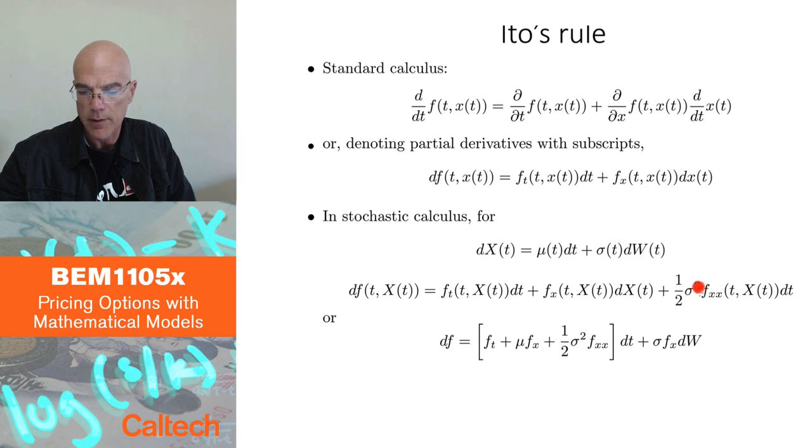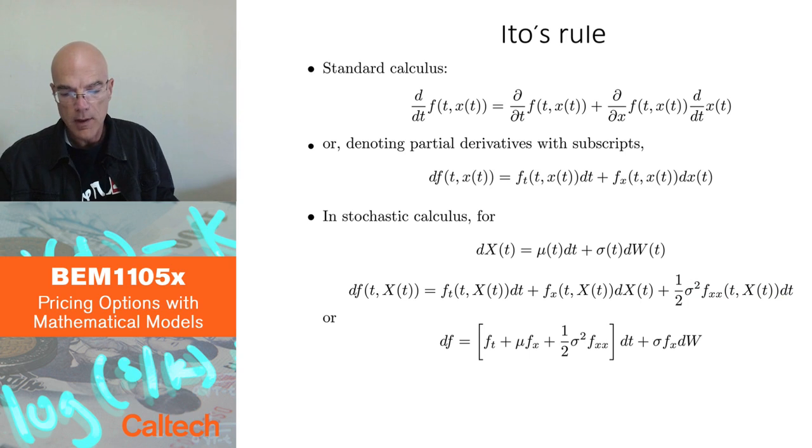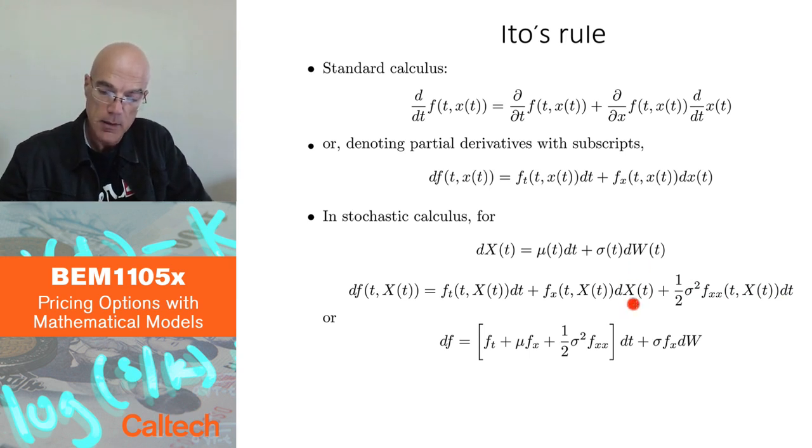If I replace dx by what it is, I can write Ito's rule in this form. So this is a nice form to use when you use Ito's rule. Change in f is a combination of partial derivatives: f_t plus mu f_x plus one half sigma squared f_xx, times dt, plus sigma f_x dW. This last line is obtained by substituting for dx this expression here.